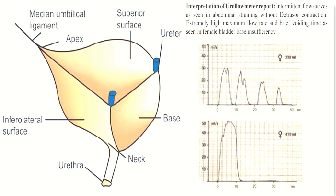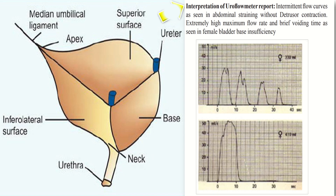In this uroflowmetry graph, we have intermittent flow curves as seen in abdominal straining without detrusor contraction. Extremely high maximum flow rate and brief voiding time are seen in female bladder insufficiency, especially bladder base insufficiency.